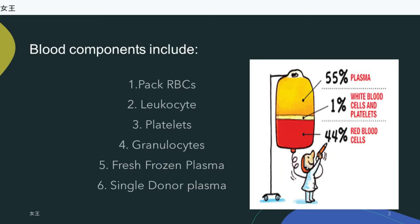Blood components include Packed RBCs, containing 100% of erythrocytes, 100% of leukocytes, and 20% of plasma originally present in one unit of whole blood. Packed RBCs are indicated to increase the oxygen-carrying capacity of blood with minimal expansion of blood volume. Leukocyte-poor Packed RBCs are indicated for patients who have experienced previous febrile non-hemolytic reactions.